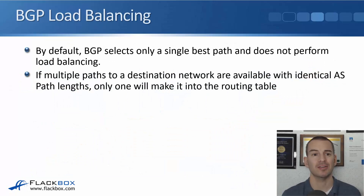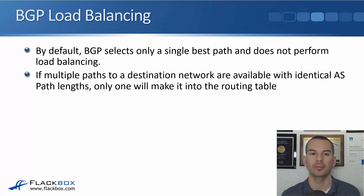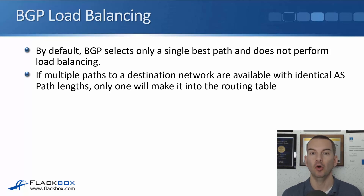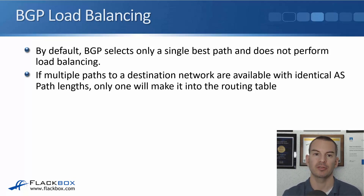By default, BGP does not do load balancing — it selects a single best path. If multiple paths to a destination have identical AS paths, only one makes it into the routing table. You can override this to enable load balancing, but by default only one path is selected.